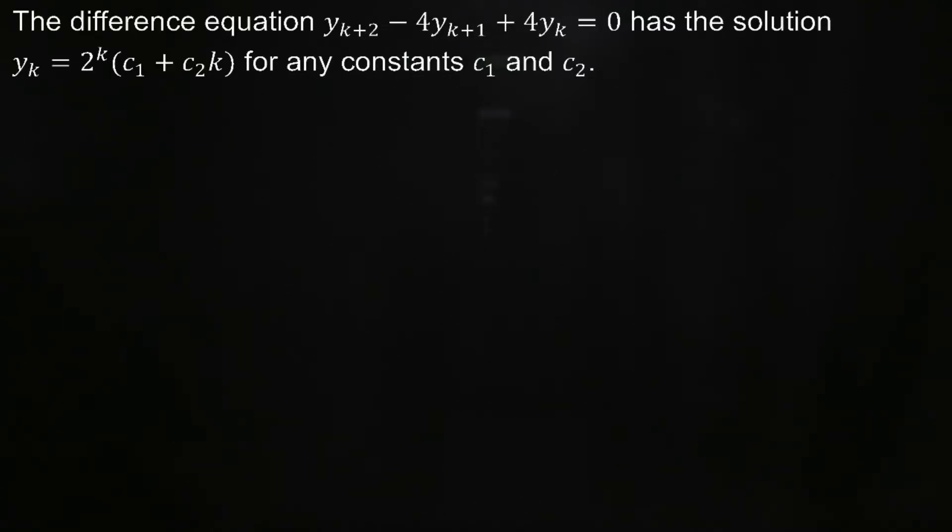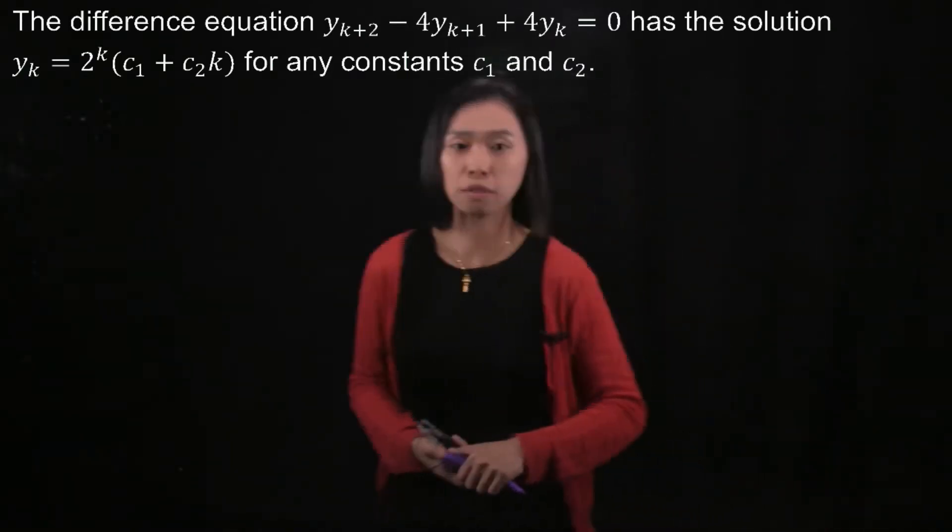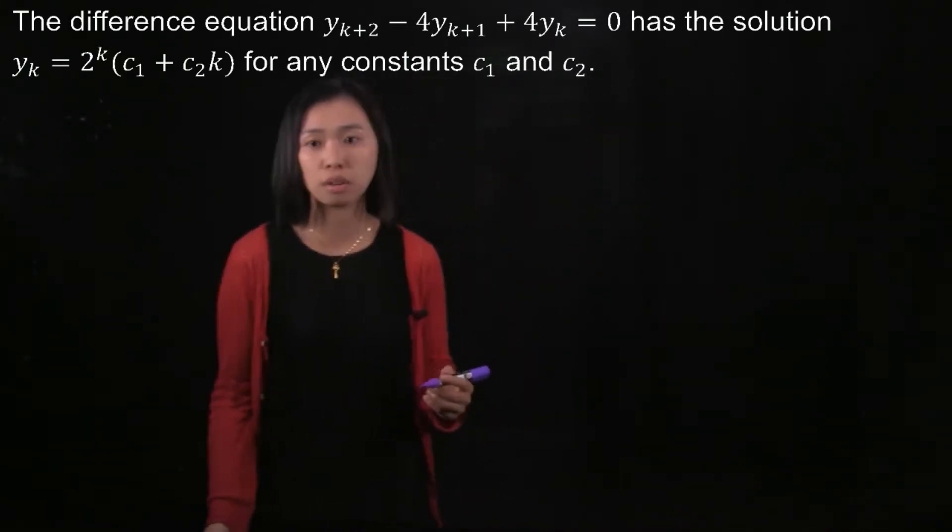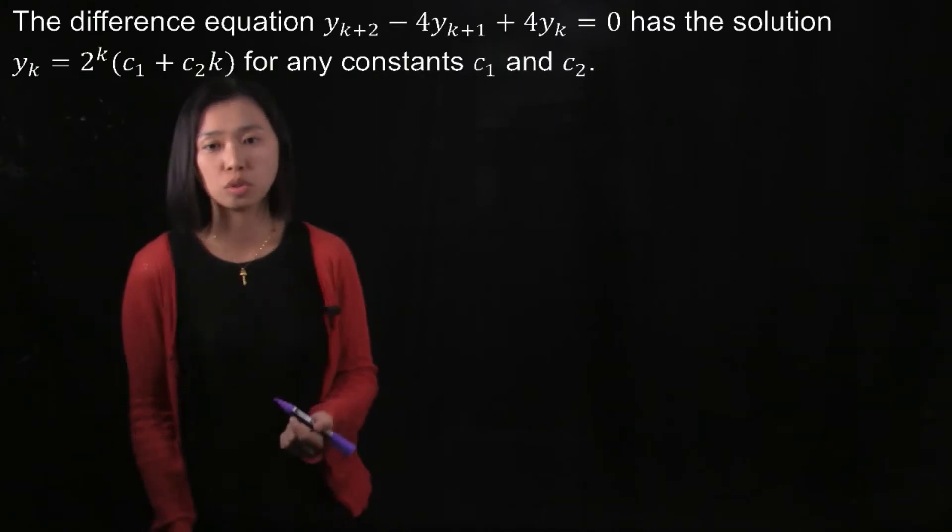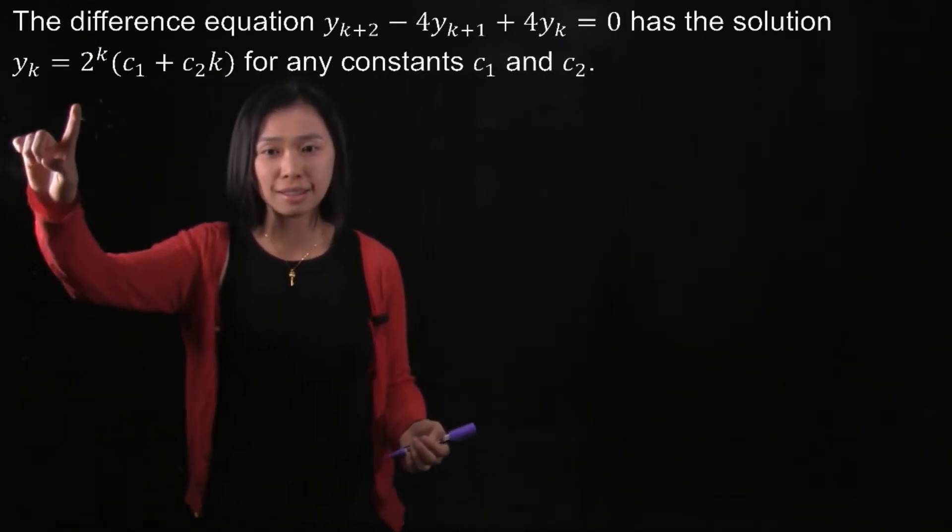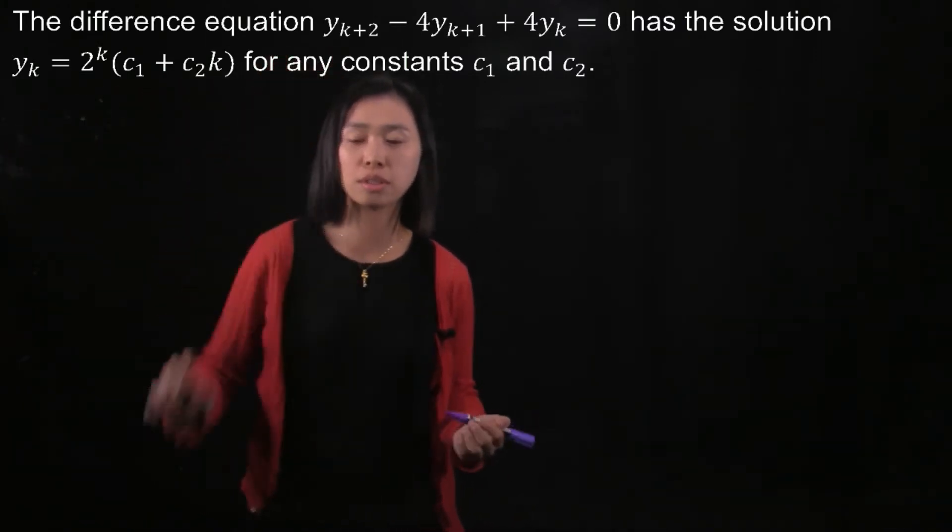The difference equation y_{k+2} - 4y_{k+1} + 4y_k = 0 has the solution y_k = 2^k(c_1 + c_2k) for any constants c_1 and c_2. We would like to verify that this is actually the solution to this difference equation.